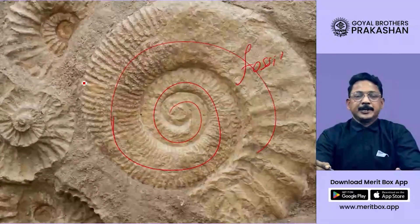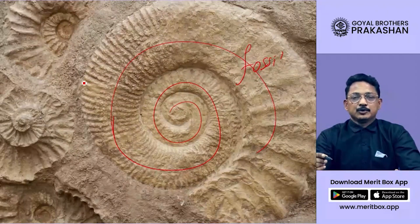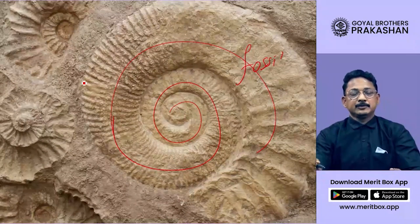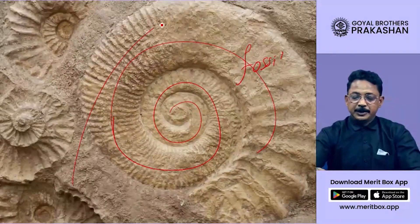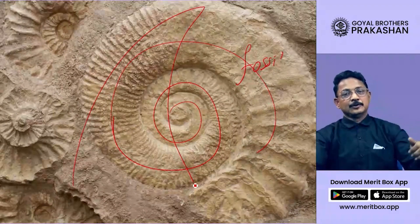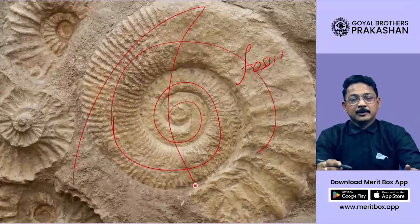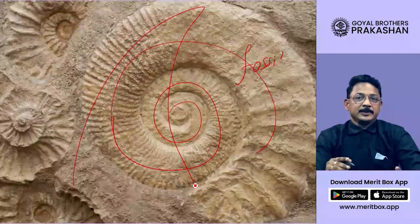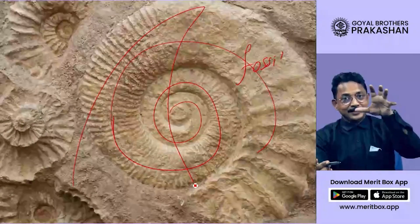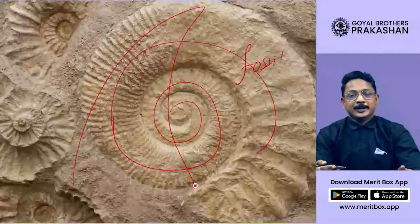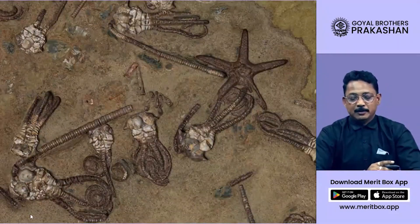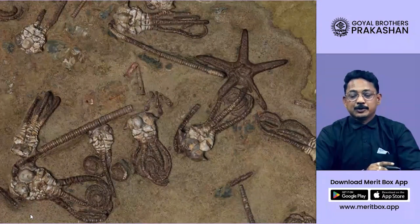How do scientists know dinosaurs were very huge? If they find a tooth of enormous size, then they reason that if the teeth are so big, how massive must the animal have been. Such teeth are found inside sedimentary rocks. In this way, sedimentary rocks give us wonderful information about the prehistoric world.